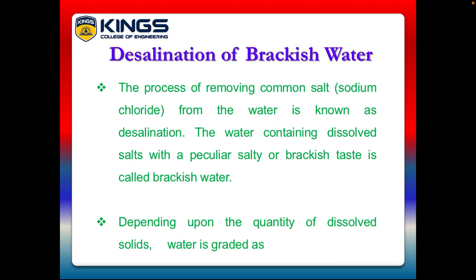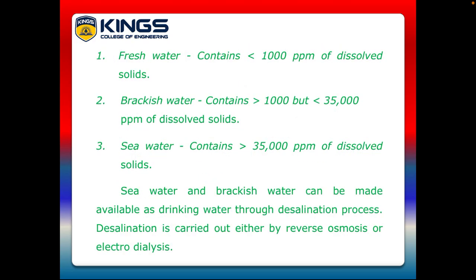Depending upon the quantity of dissolved solids, water is categorized as three types. First, fresh water contains below 1000 ppm of dissolved solids. Second, brackish water contains above 1000 but below 35,000 ppm of dissolved solids. And finally, sea water contains above 35,000 ppm of dissolved solids.